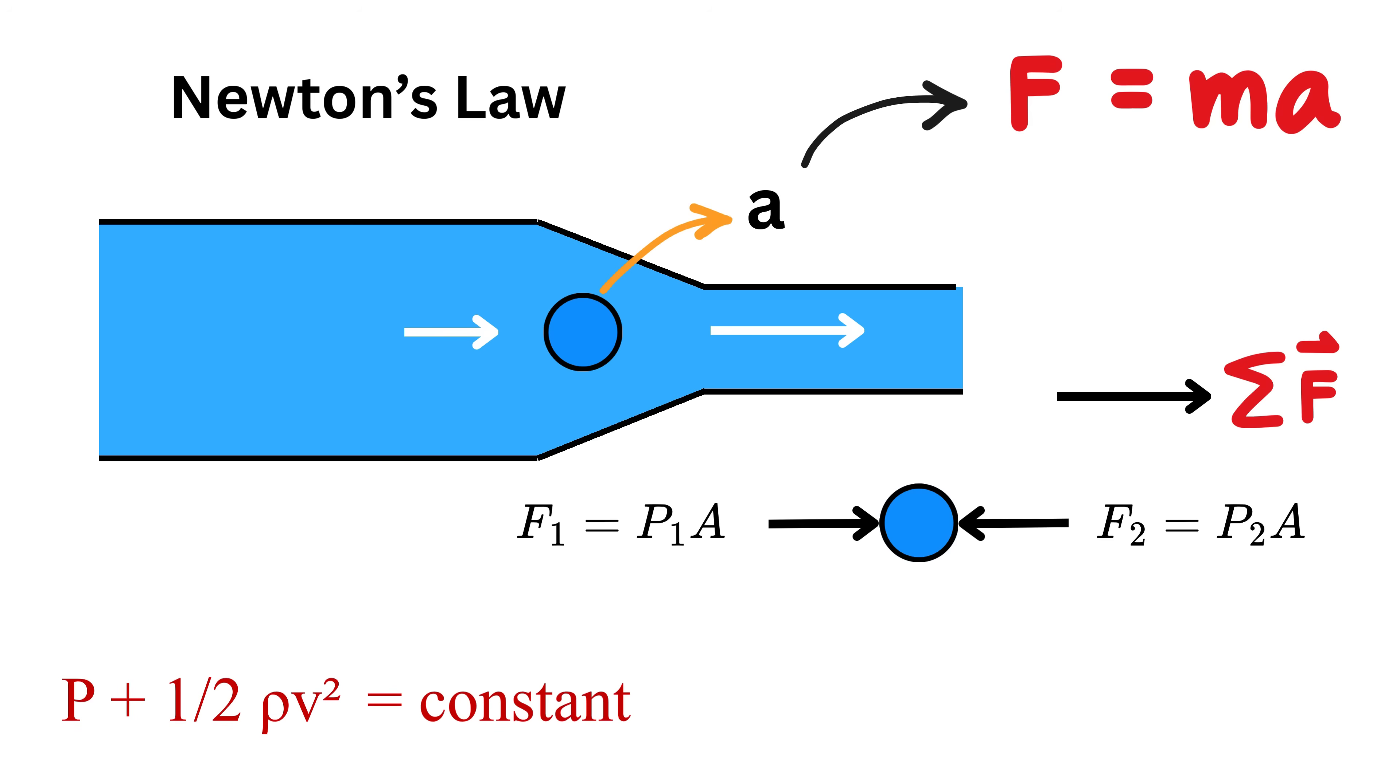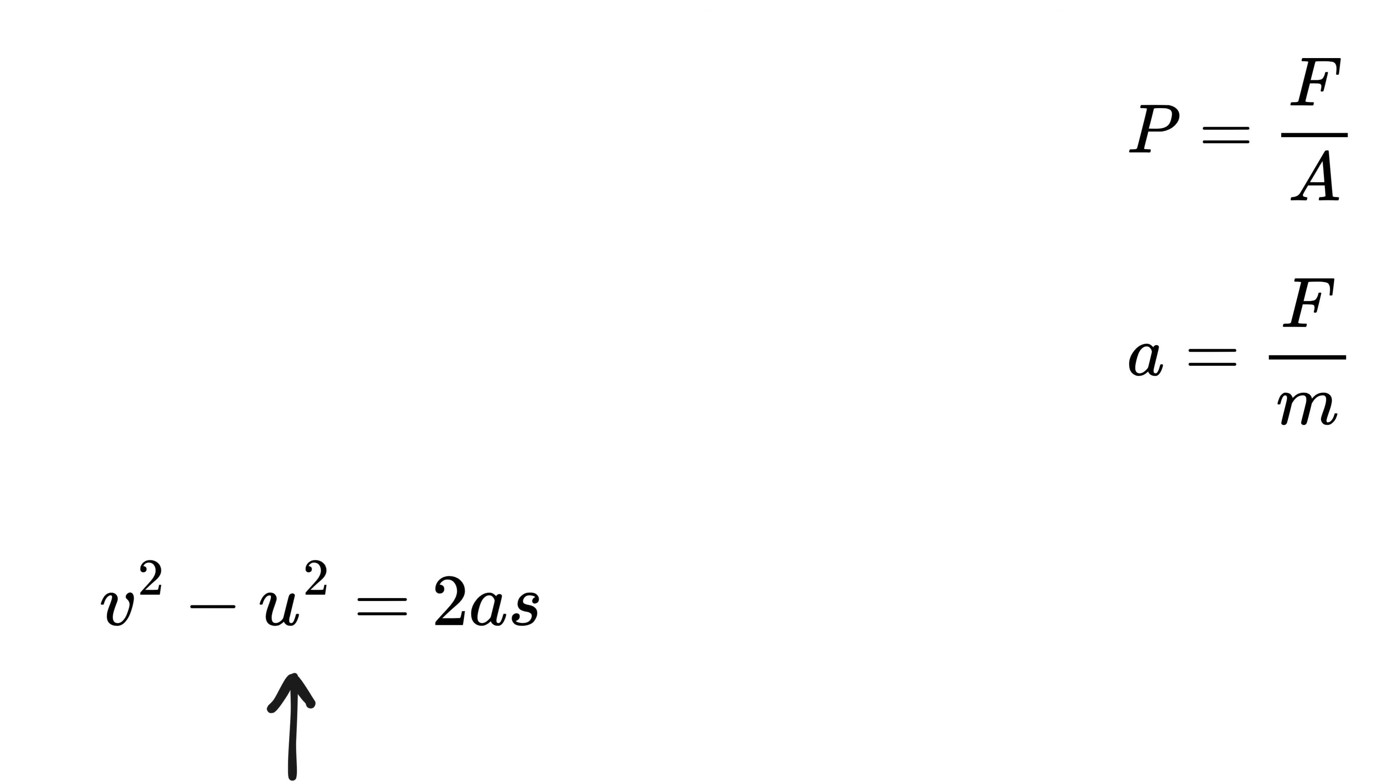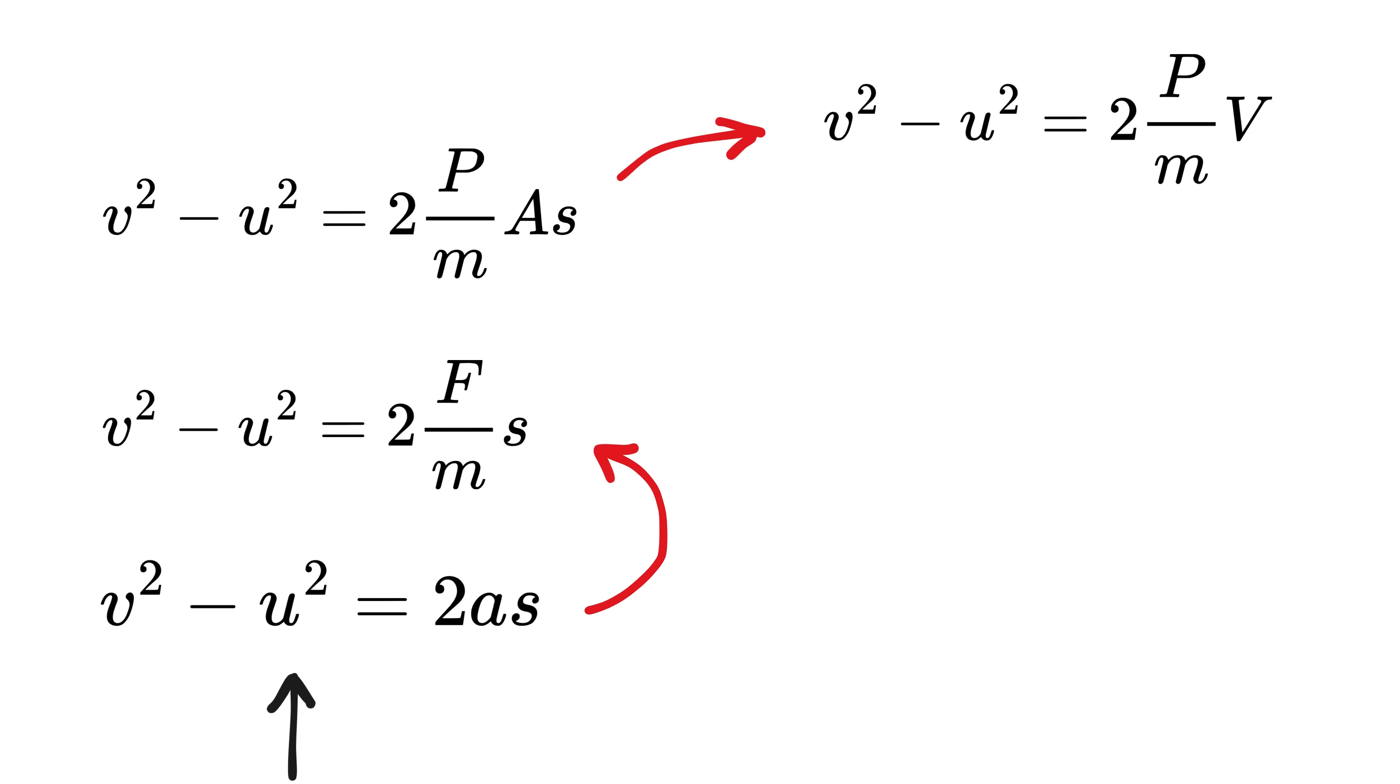So for the fluid to accelerate, there must be more pressure behind it and less pressure ahead of it. That pressure difference is what causes the acceleration. In other words, if you use P equals F over A, acceleration as F over M, and use the kinematic relation between velocity and acceleration, then you might get a rough idea of how Bernoulli's principle is just Newton's law written in terms of energy instead of force.